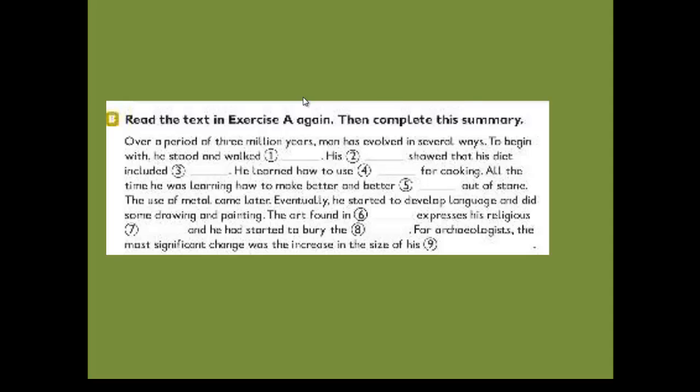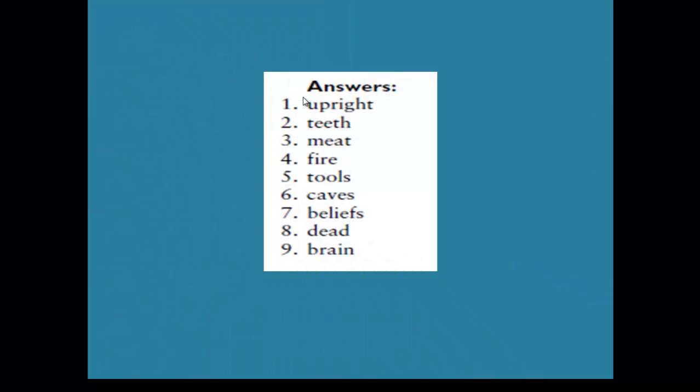So here you can see the nine spaces or the nine words which are put in the previous spaces. The first one is upright, then we have teeth, meat, fire, tools, caves, beliefs, dead, and brain.